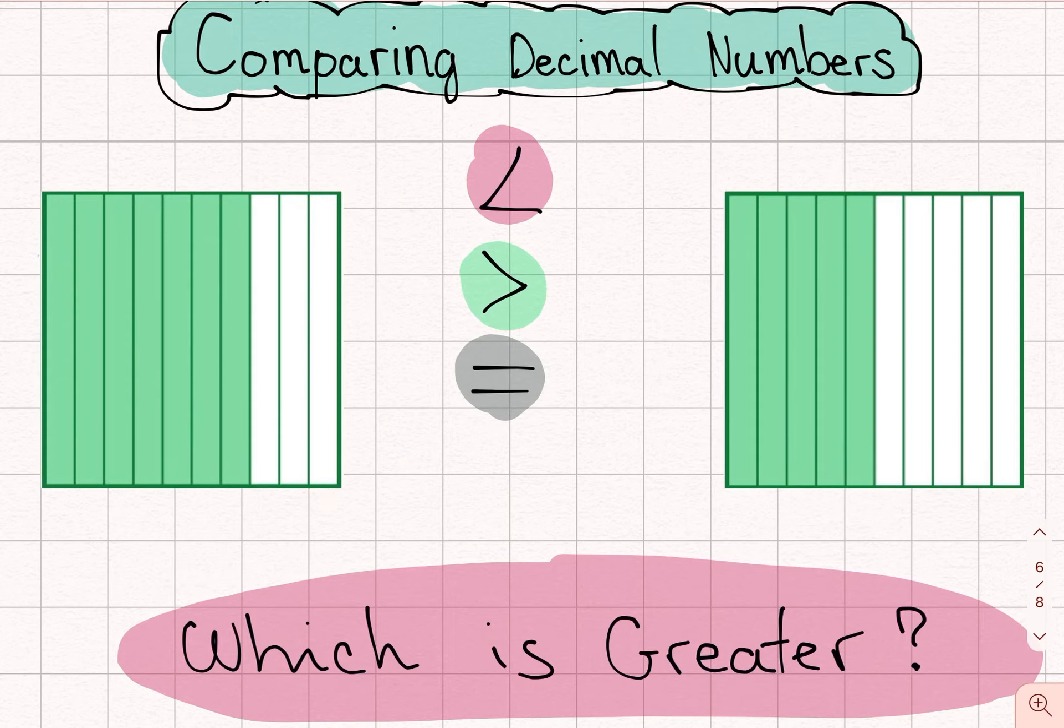How many tenths are shaded? 1, 2, 3, 4, 5, 6, 7. Seven tenths. I'm going to go ahead and write that down. Seven tenths.